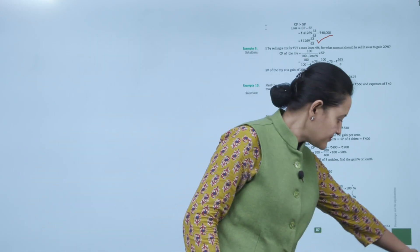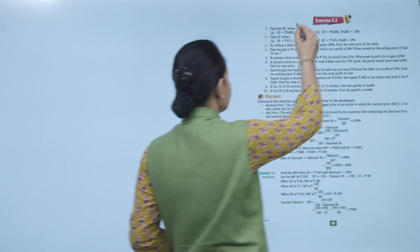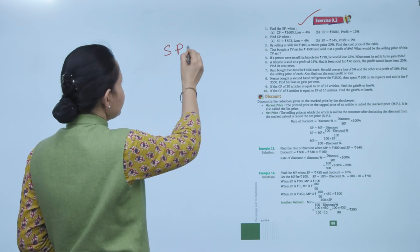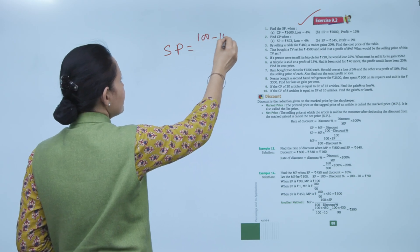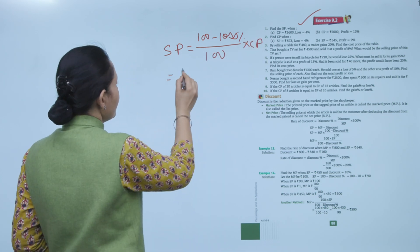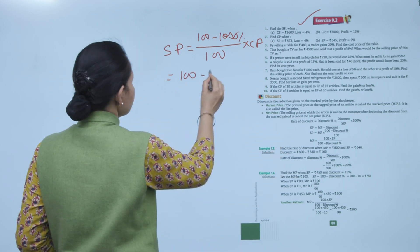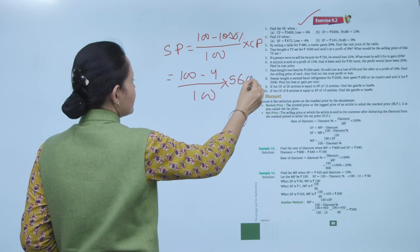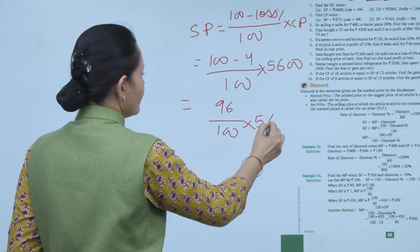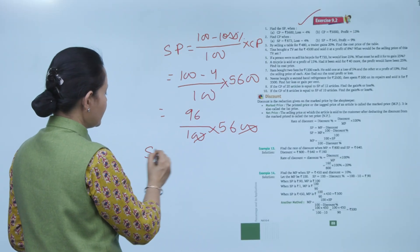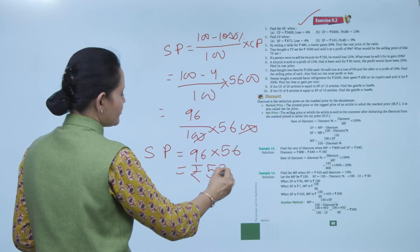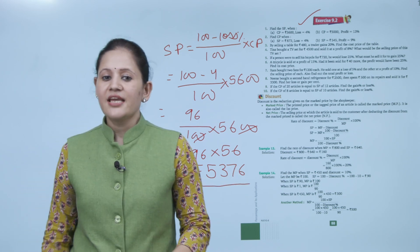Practice all examples. Next is Exercise 9.2. Find the SP when CP = Rs. 5600 and loss% = 4%. SP = [(100 − 4)/100] × 5600 = (96/100) × 5600 = 96 × 56 = Rs. 5376.